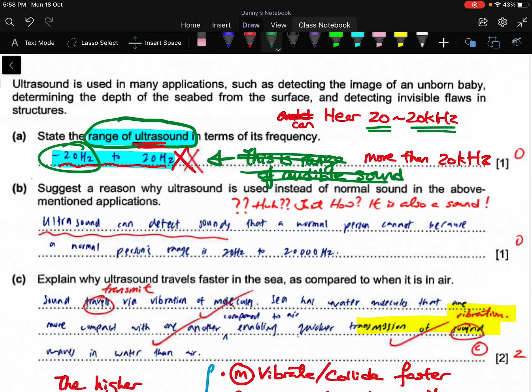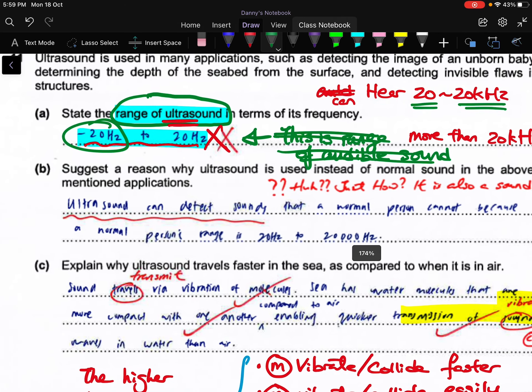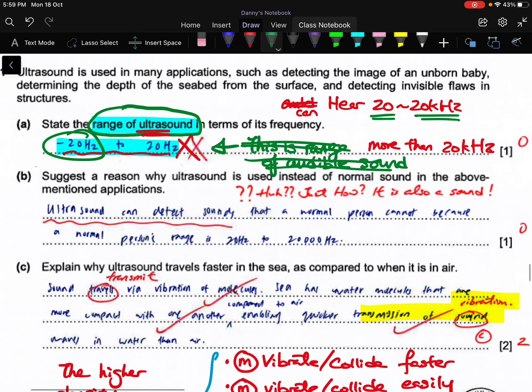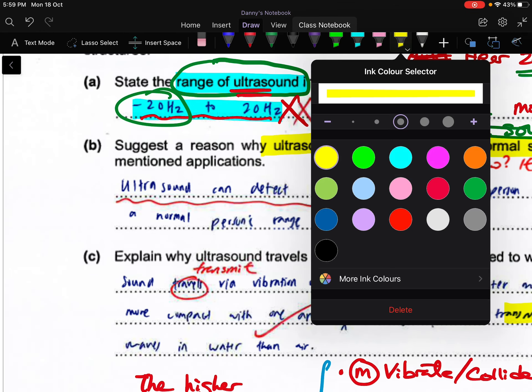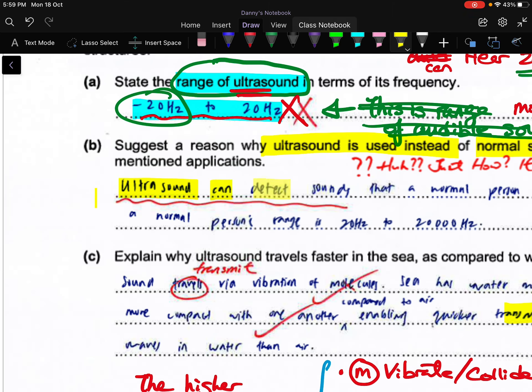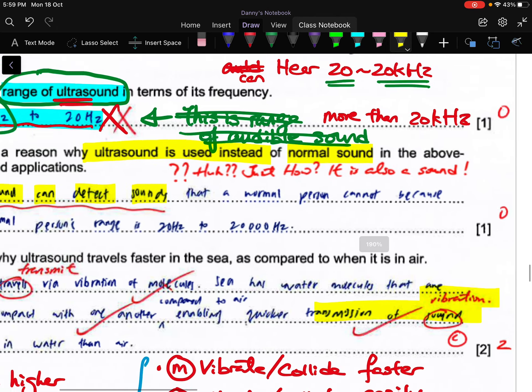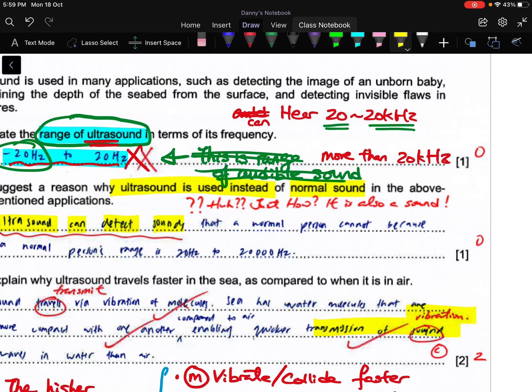During your revision you should ask yourself: what is frequency? Can you answer that? What is f, what's lambda? For part b, they are asking you why ultrasound is used rather than normal sound. Many of you can tell me that ultrasound cannot be heard, but you need to tell me why is it important that it is not heard. Once again, you can see the candidate here is showing signs of anxiety because she wrote things like 'ultrasound can detect sound.' Your ear can detect sound, a microphone can detect sound, but ultrasound is a type of sound, so they cannot detect sound.